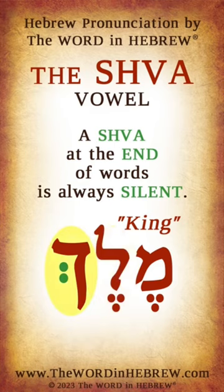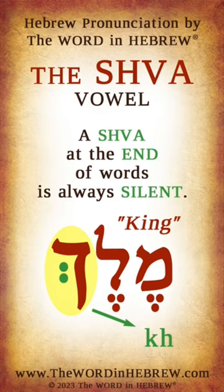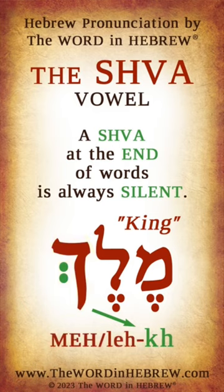The last letter here is chaf sofit, with the base sound of ch. The sheva at the end of a word is always silent, so we only pronounce the base sound of that letter, which is ch. When we put it all together, we get me-lech — melech, which means king or a king.